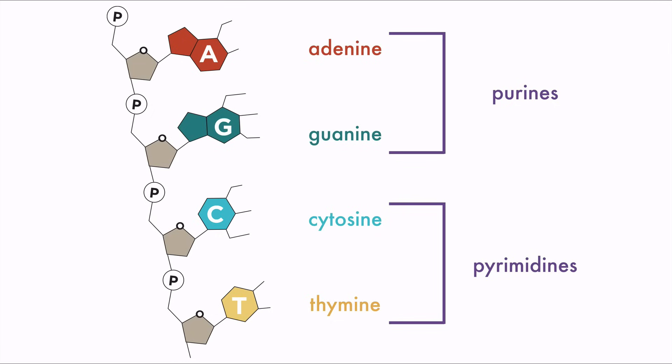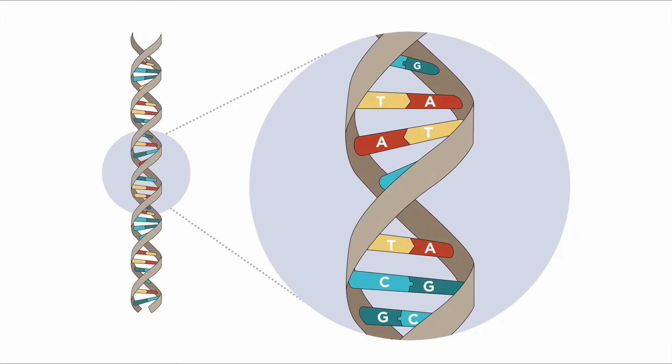A purine always pairs with a pyrimidine. And the slanted shape of the DNA molecule causes it to form a spiral or helix. Because DNA is double-stranded, we use the phrase double helix to describe its structure.